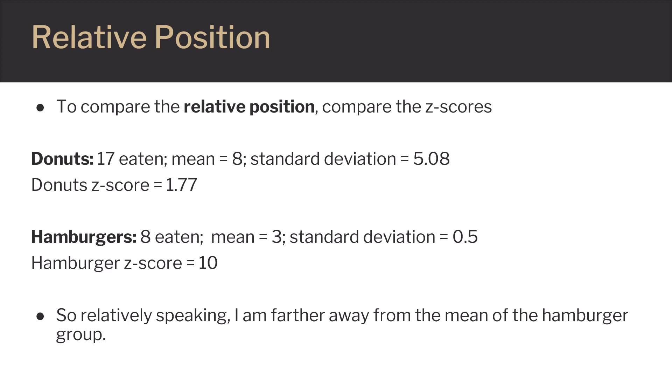In our hamburger example, 8 were eaten, the mean was 3, and the standard deviation was 0.5. Our hamburger Z-score was 10. So, relatively speaking, I am farther away from the mean of the hamburger group than I would be in the donut example.